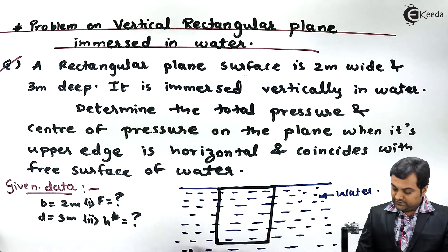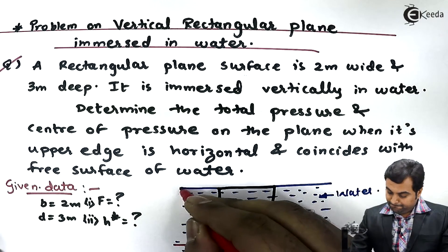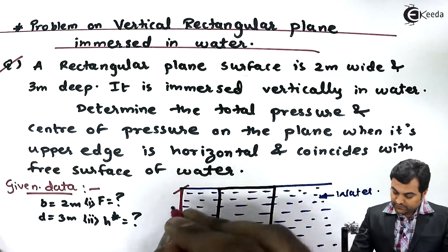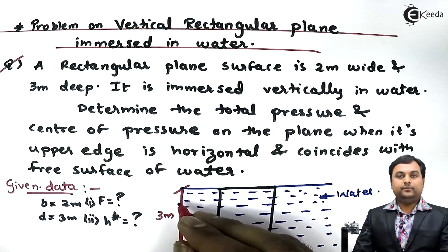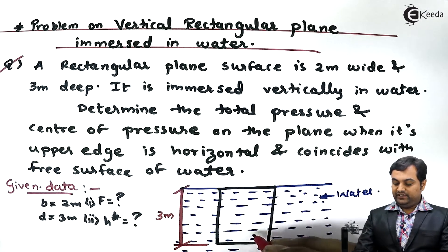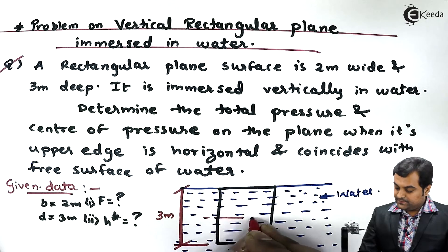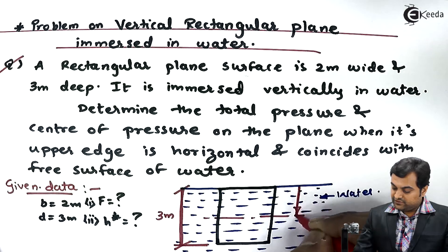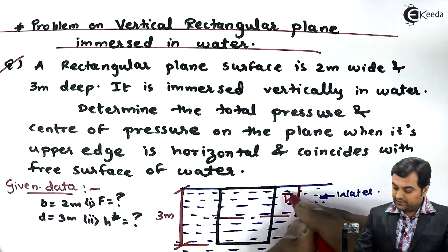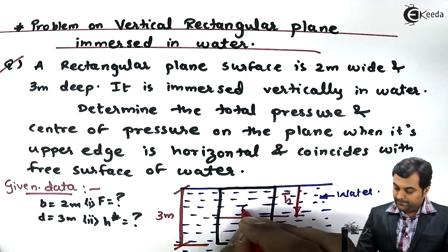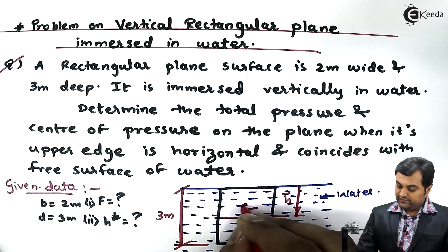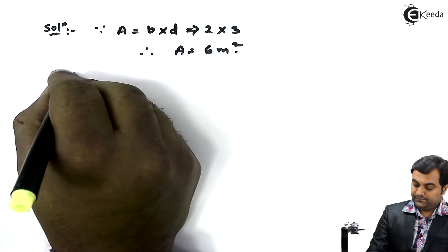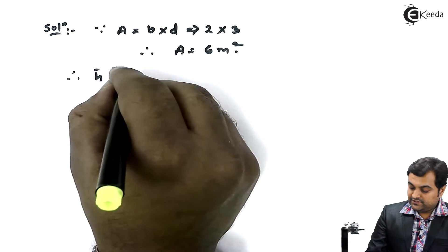Now after getting area, we have to even locate the centroid. Since the height of the rectangular plate is 3 meter, the centroid or center of gravity will be at exactly half of this. So this distance from the free surface of water is nothing but H bar, the location of centroid. This H bar would be half of 3, so therefore H bar is equal to 1.5 meter.